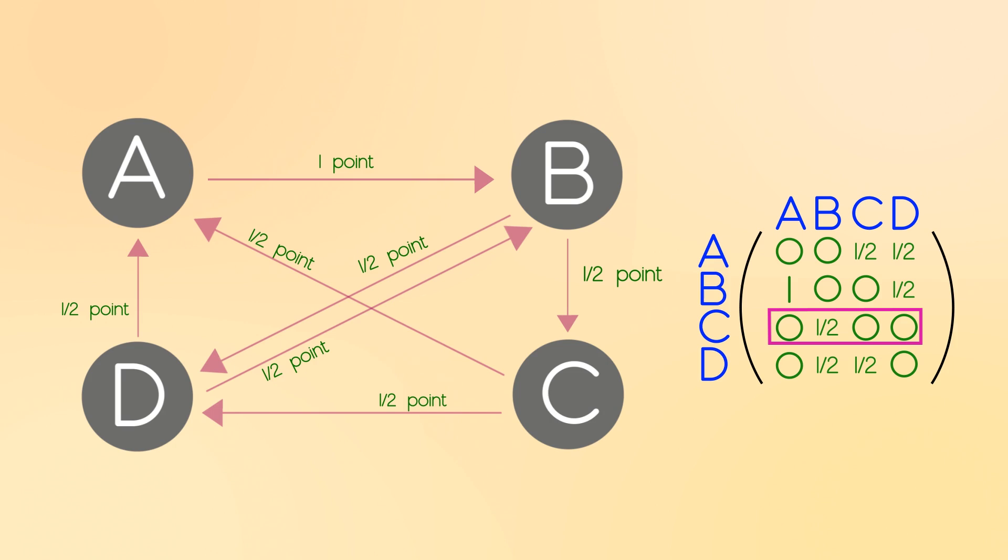By the way, no, the algorithm is not just adding the numbers in these rows. Yes, B got the most points in total, but that's not the only reason it will be ranked number one. I mean, you'll see A and D tied, yet one of them will be ranked higher, as we'll see soon.